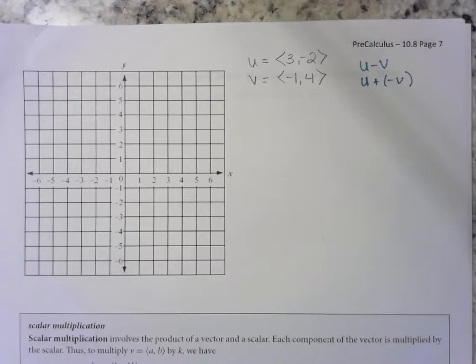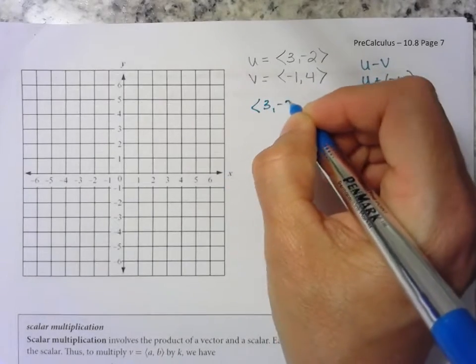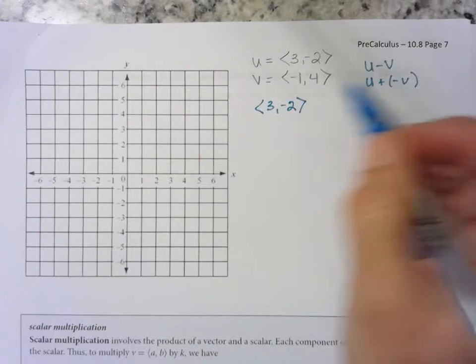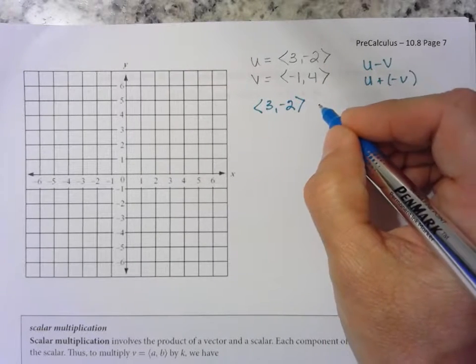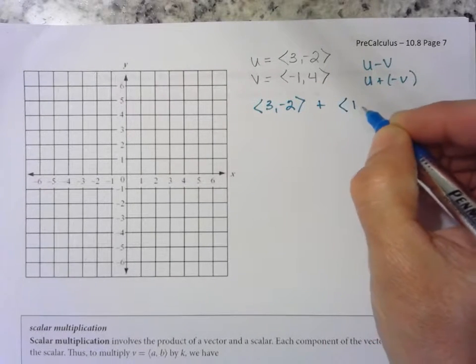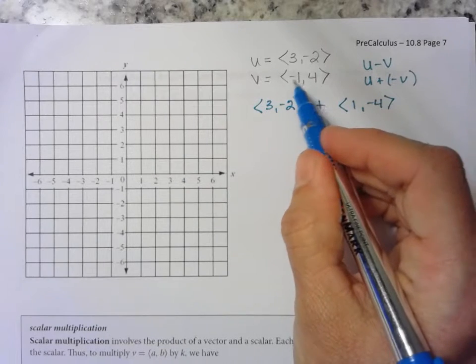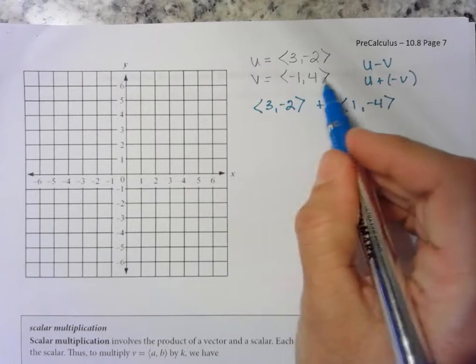So what we could do is add <3, -2> and the opposite of v. Add this one and this one.